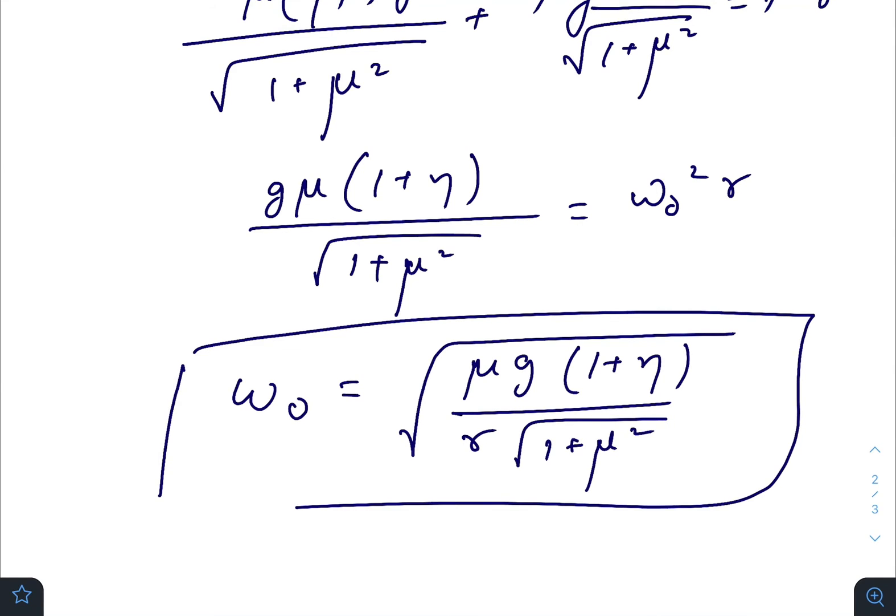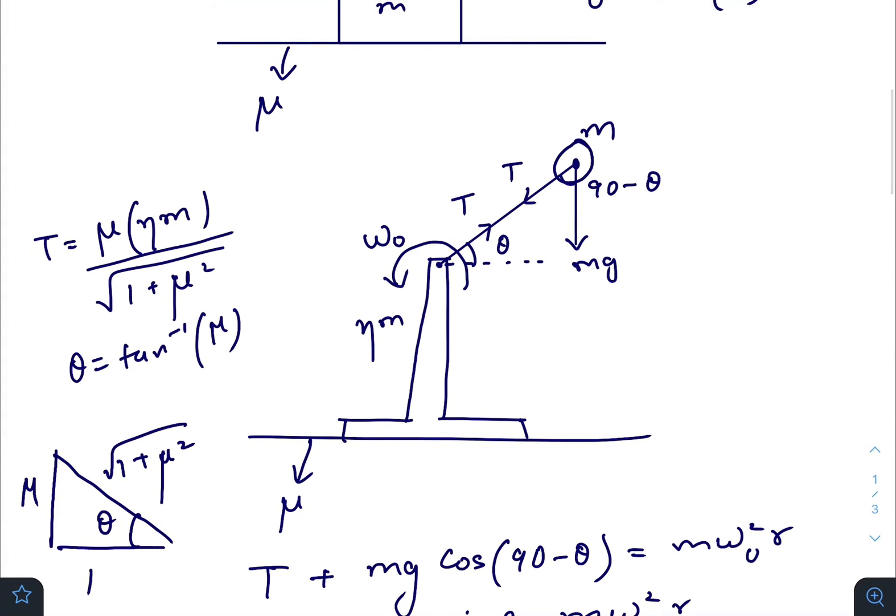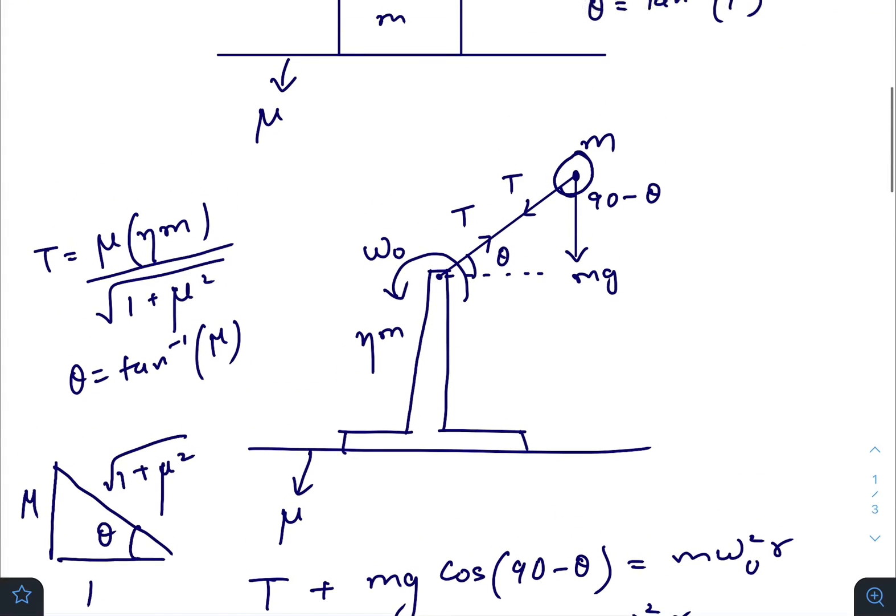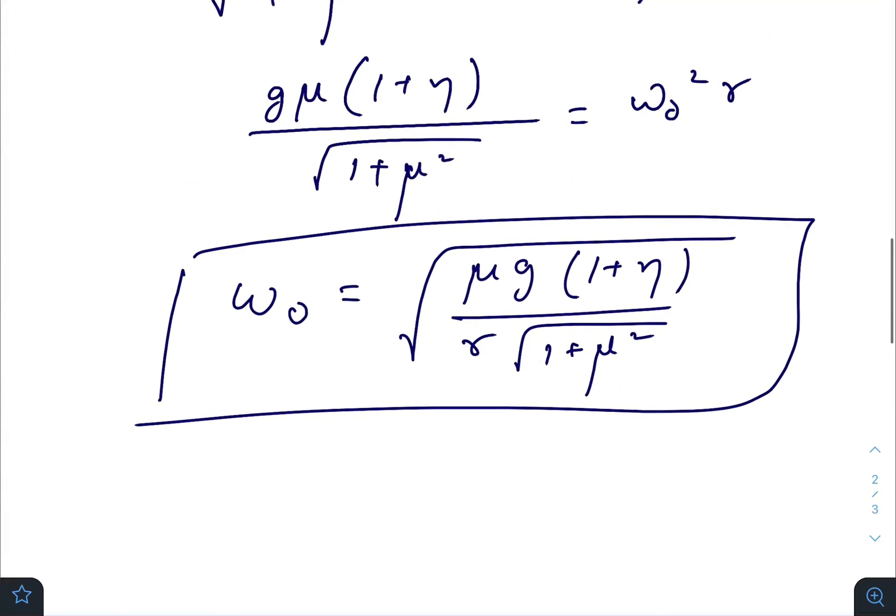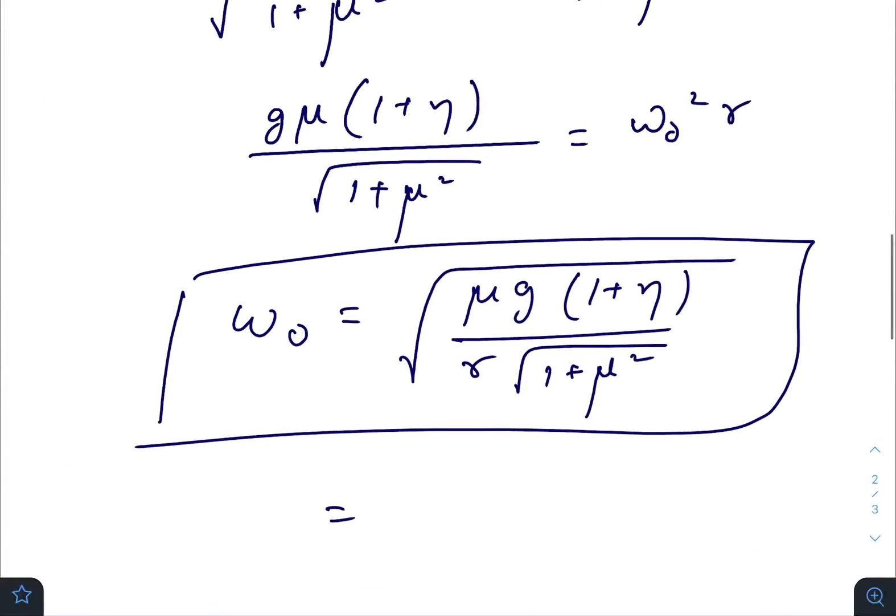This is the minimum angular velocity with which this mass must rotate to just slide this whole system. That will happen when the rod makes an angle θ with the horizontal, where θ = tan⁻¹(μ). This is our expression, and using the values given in the question, we get an answer of 5 radians per second.